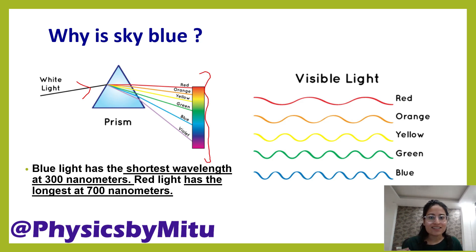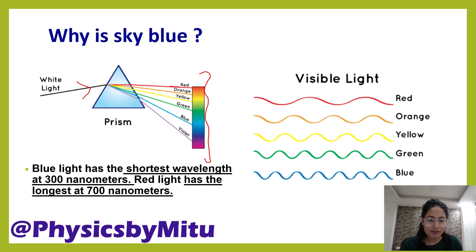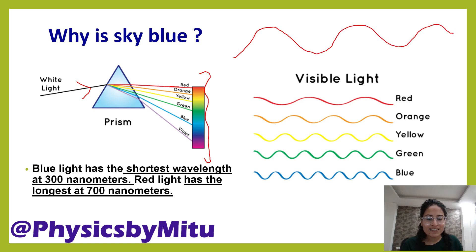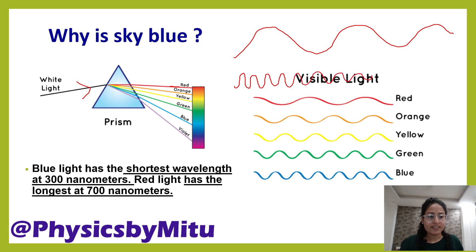Now these colors are actually waves — light is a wave. The red wave has a large wavelength, and the violet wave has a small wavelength. Red has the longest wavelength.